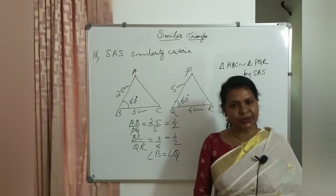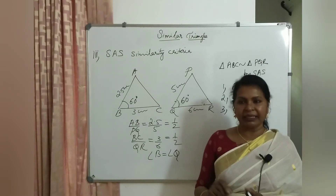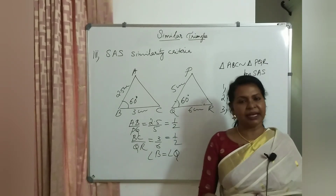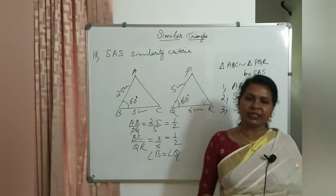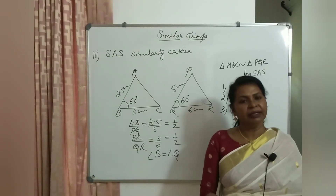So what are the similarity conditions — the criteria? AA similarity, SSS similarity, and SAS similarity. These are the three similarity criteria for triangles.